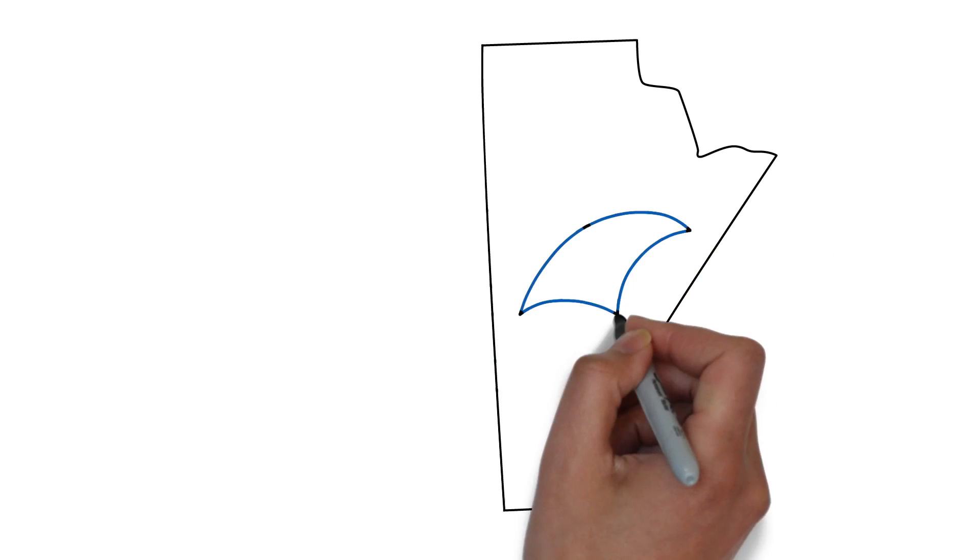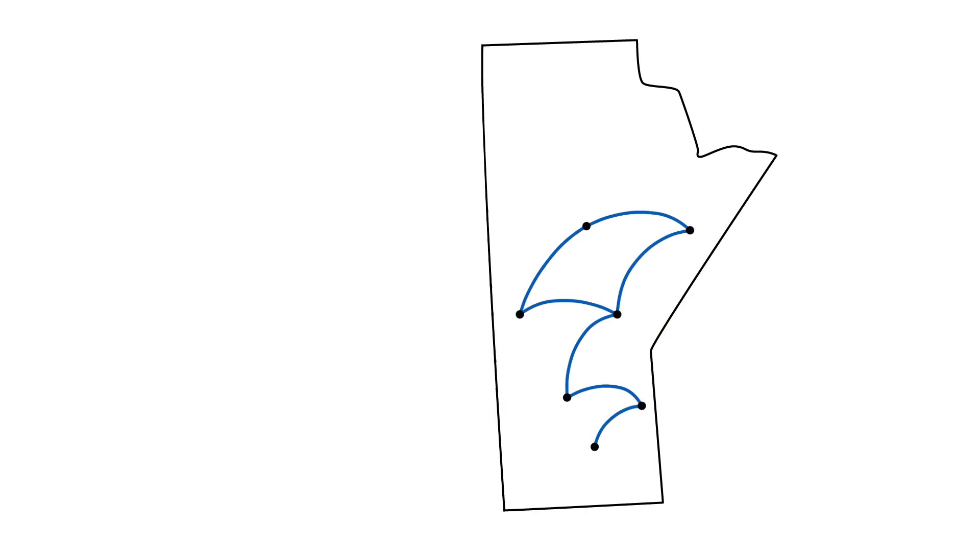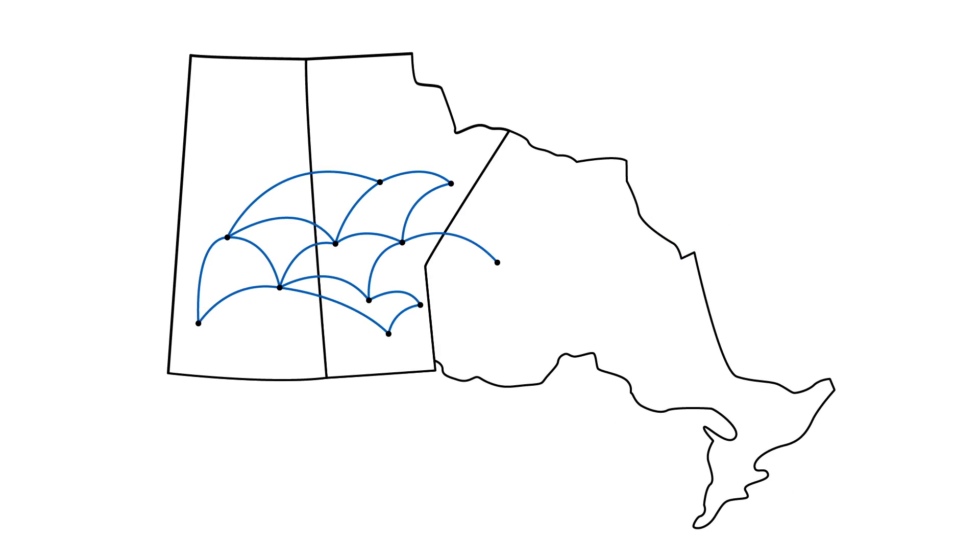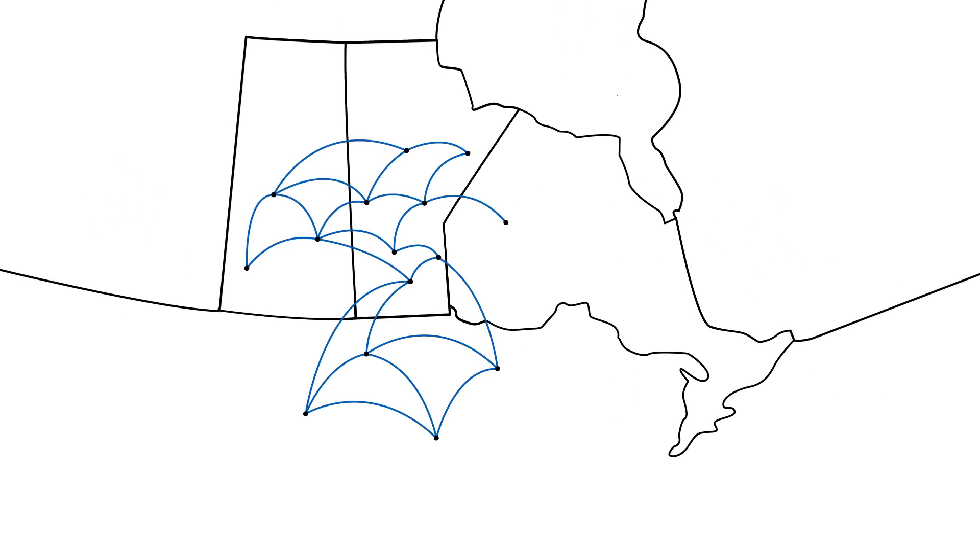Our network also includes transmission lines that connect Manitoba's power grid to grids in Saskatchewan, Ontario and the United States. These connections provide access to additional sources of generation outside of the province and allow us to sell electricity when it's not needed in Manitoba.